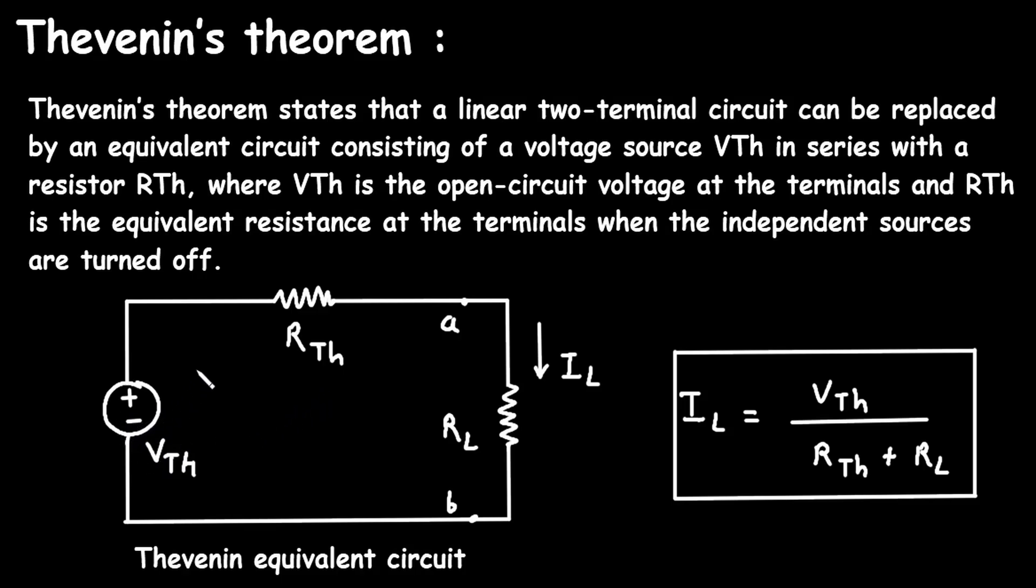Identify the two terminals, labeled A and B, across which you want to find the equivalent. Calculate the open circuit voltage across these terminals. This voltage is Vth.